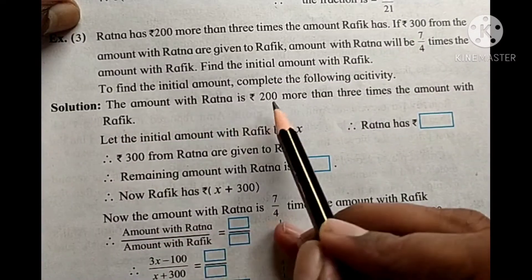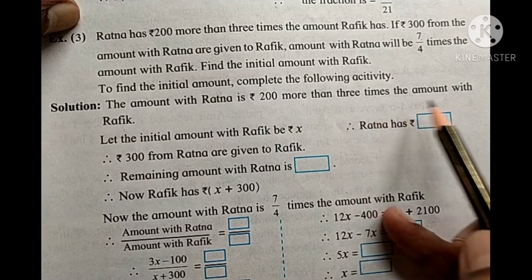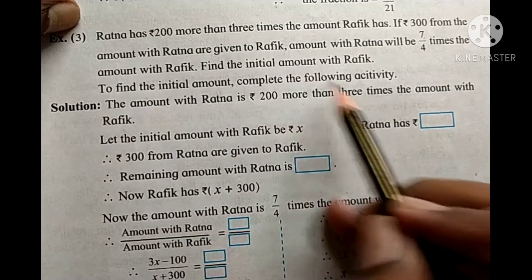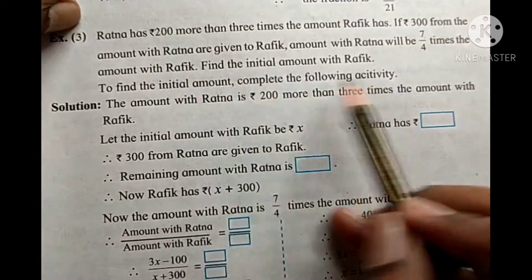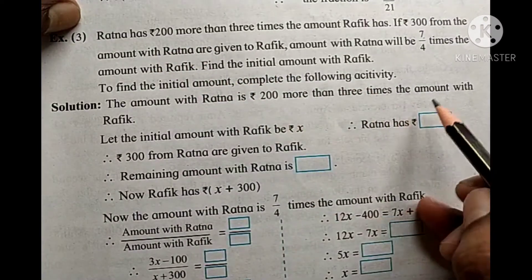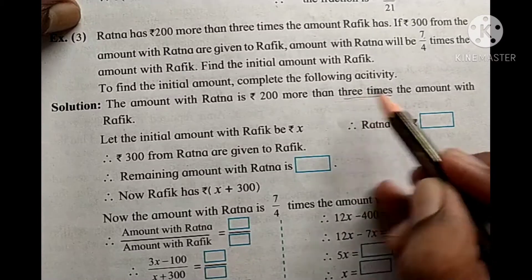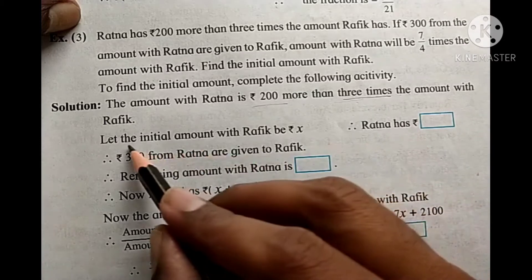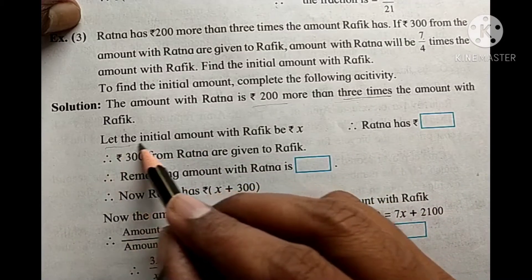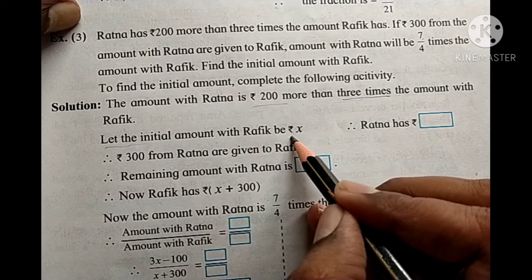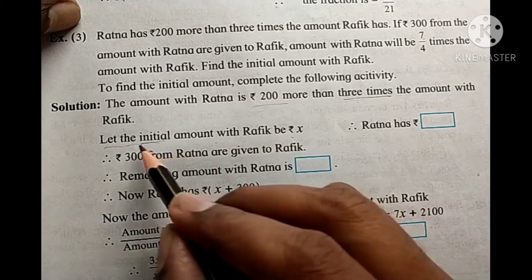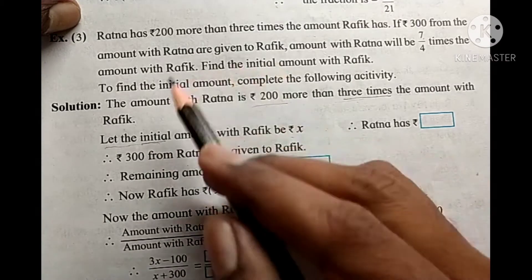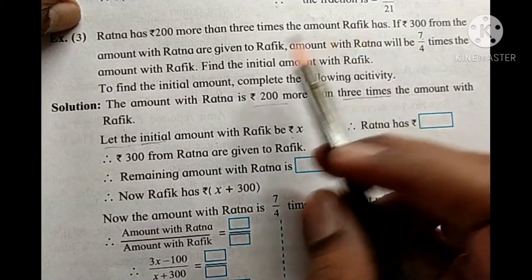Let's check this problem and solve it step by step. Let the initial amount with Rafiq be x. Ratna has ₹200 more than 3 times Rafiq's amount, so the initial amount with Ratna is 3x plus 200.